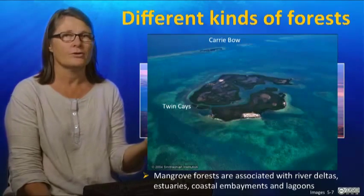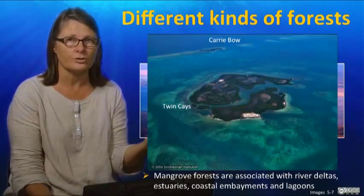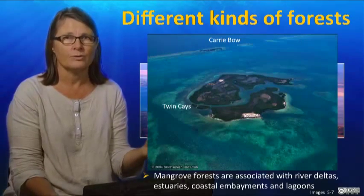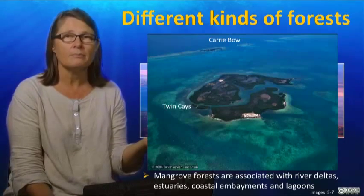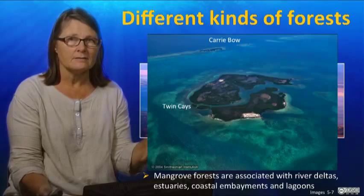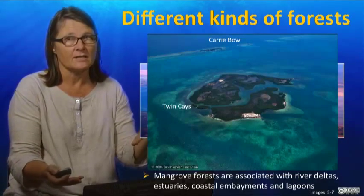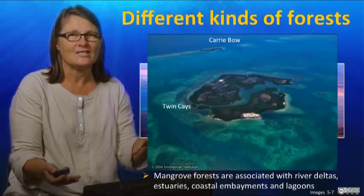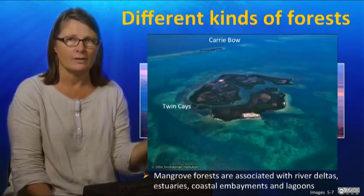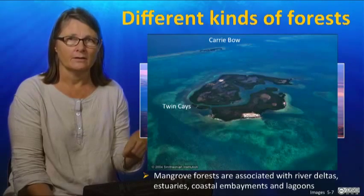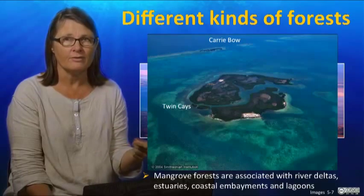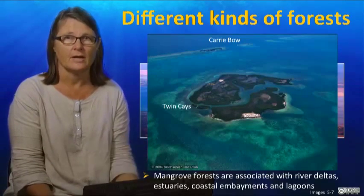The last type of mangrove forest I want to draw attention to are those within reefy or lagoonal habitats. This picture is from Belize, where mangroves colonise islands — they actually construct or assist in making islands inside a barrier reef. These are common in the Americas, but also in the Great Barrier Reef and throughout Indonesia and the Indo-Pacific.